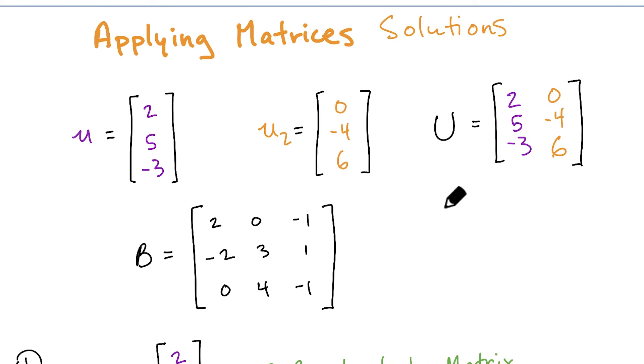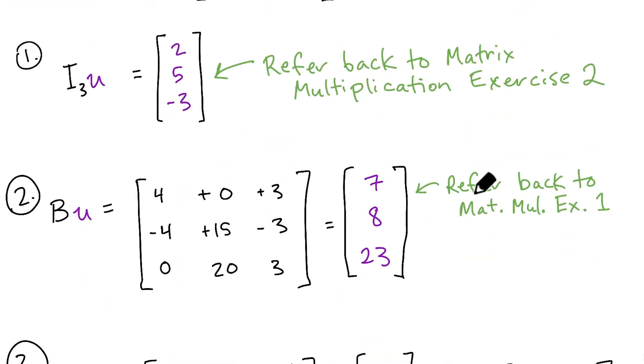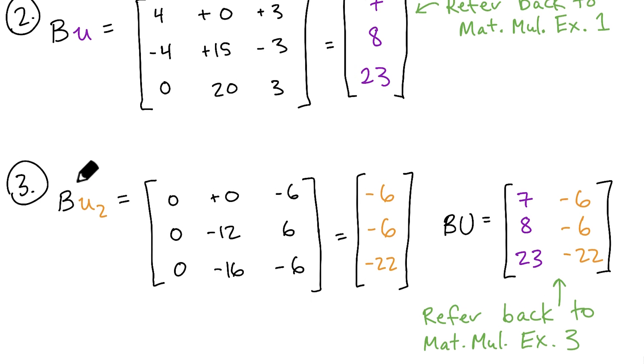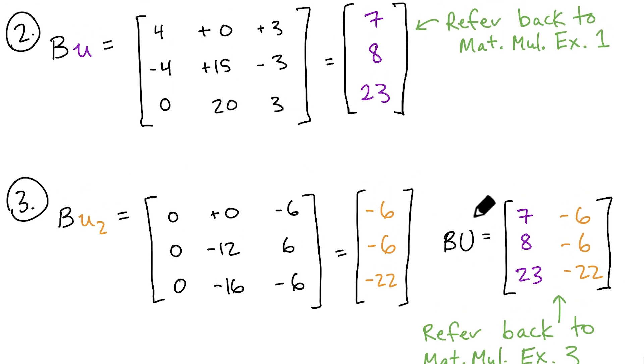And then finally, in exercise 3, we're asked to apply this matrix B to this matrix U, which we create by concatenating U and U2, these two column vectors together, into a single matrix. So based on an understanding of matrix multiplication, we've already done half of the work, because the columns will end up being independent as we apply the matrix B to them.